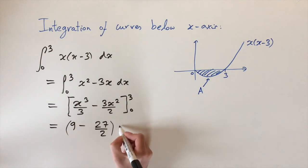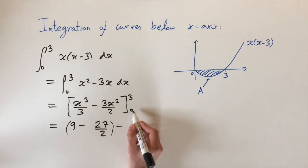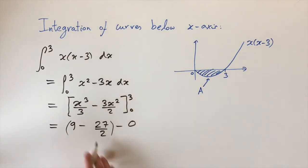So this first bracket is the first term, and then if we put 0 we get 0. So it's just this value that we need to worry about. And then since 9 is the same as 18 divided by 2, then this answer is going to be actually minus 9 divided by 2, or minus 4.5.